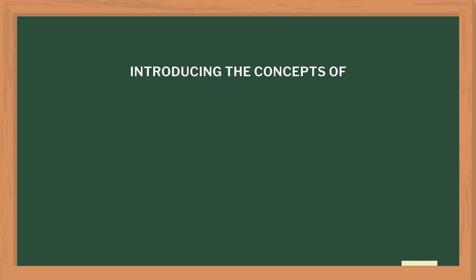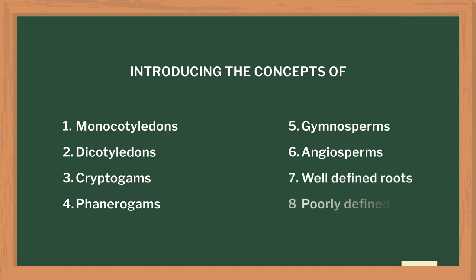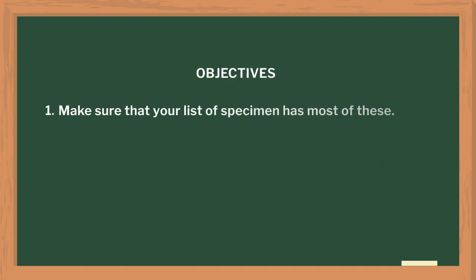Through this activity, we want to introduce the concepts of monocotyledons, dicotyledons, cryptogams, phanerogams, gymnosperms, angiosperms, well-defined roots and poorly-defined roots. So make sure that your list of specimens covers most of these.